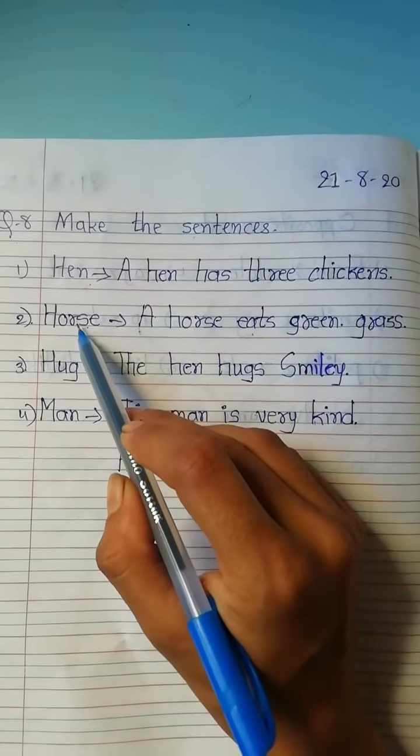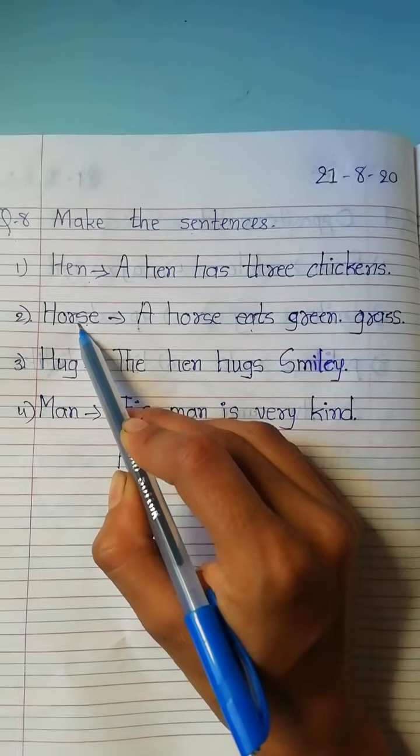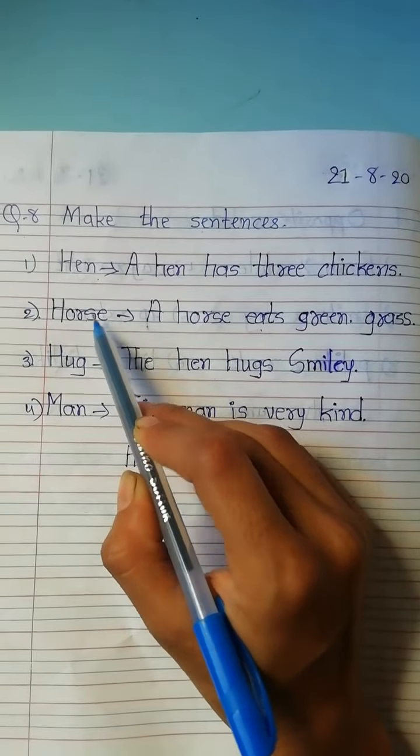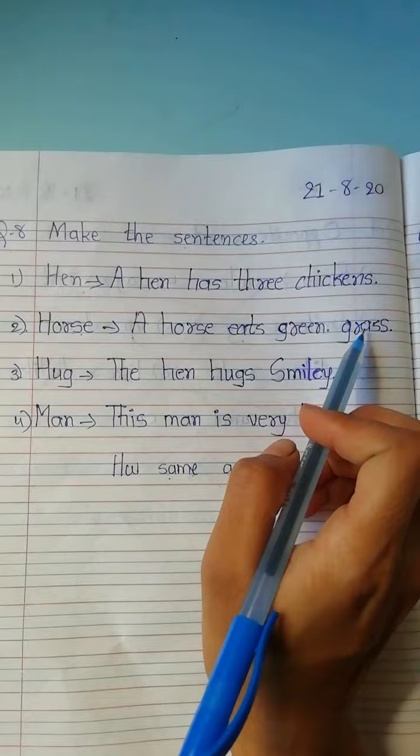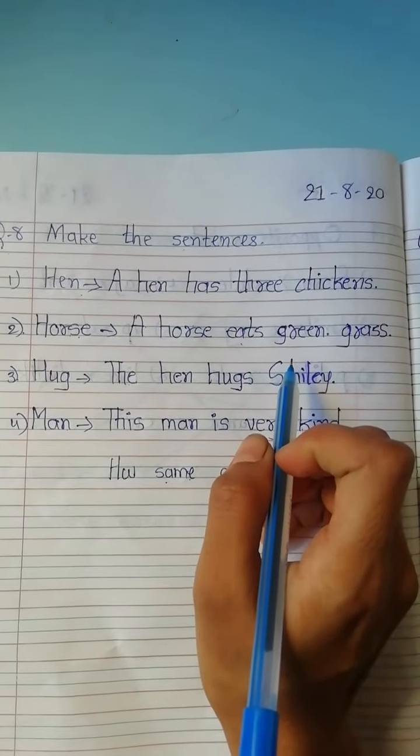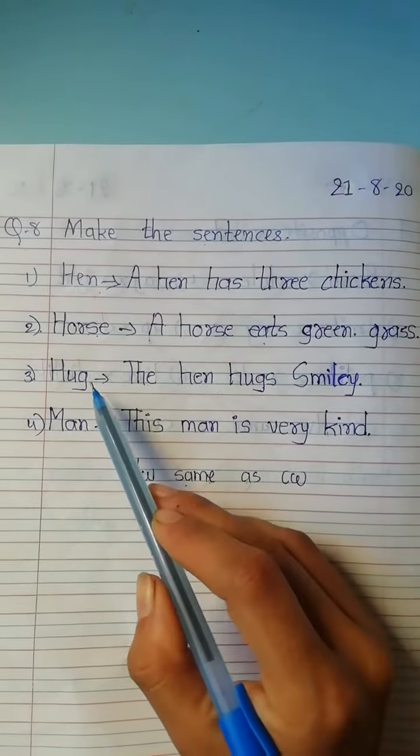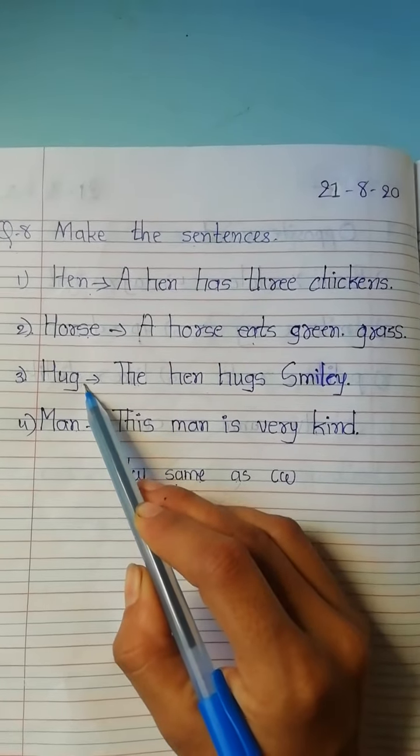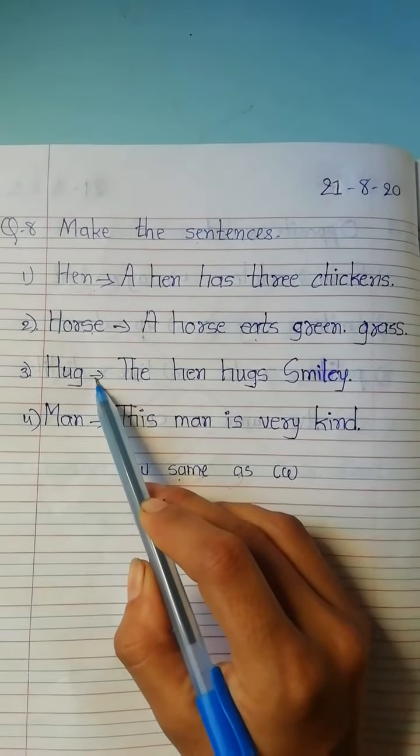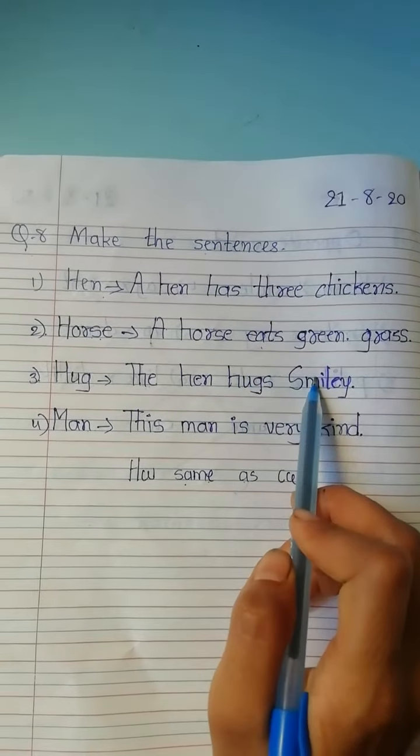The next second one is horse. We make sentence about horse. A horse eats green grass. Then other, horse is running fast. Then next, third one is hug. We make sentence about hug. The hen hugs smiley.